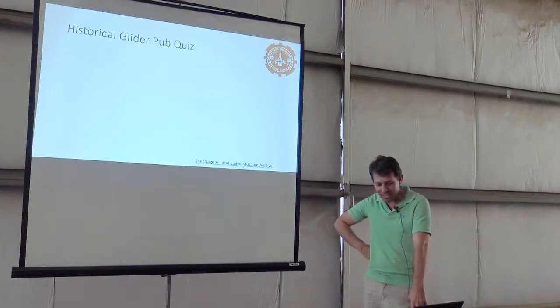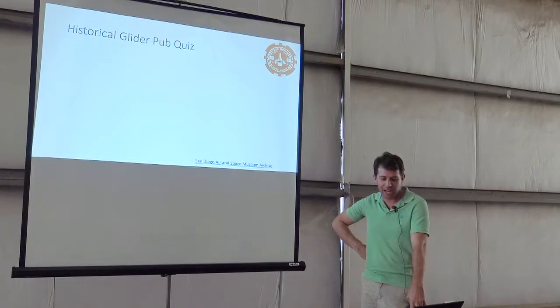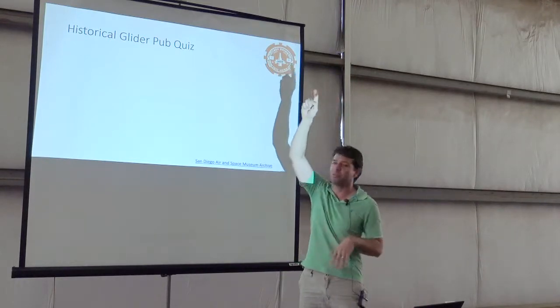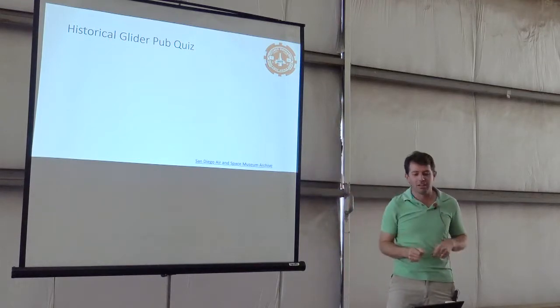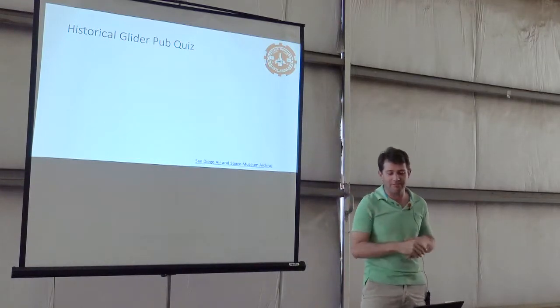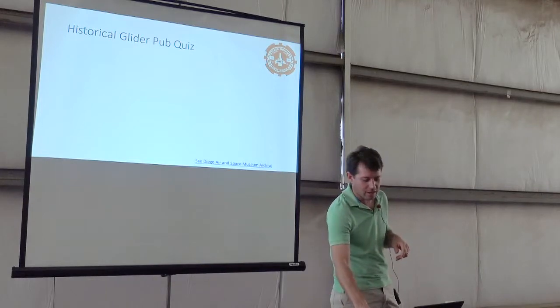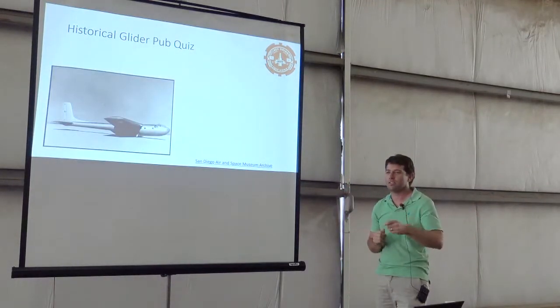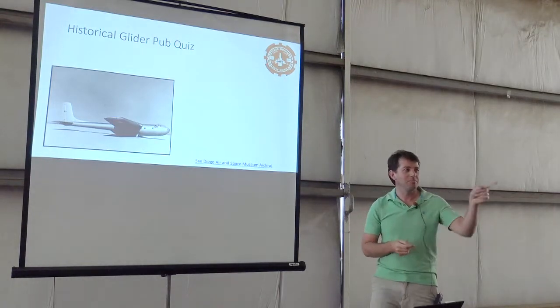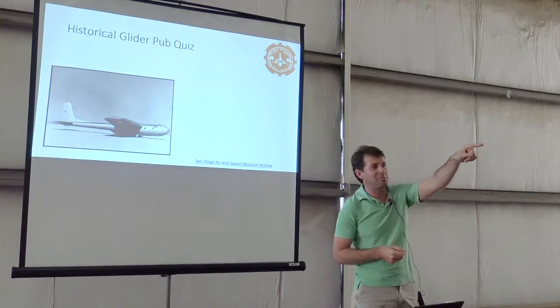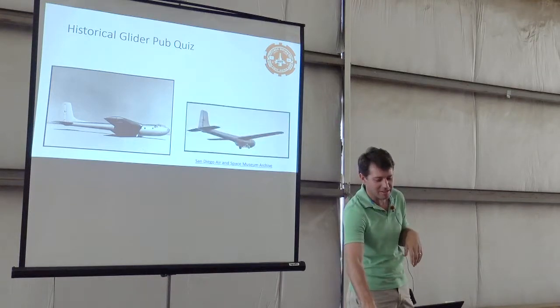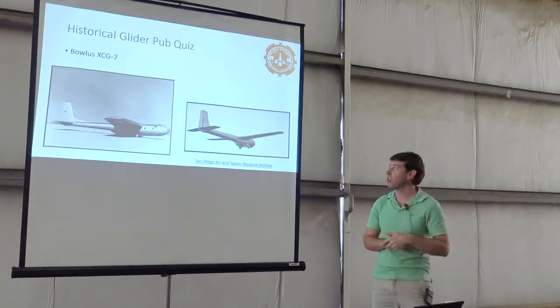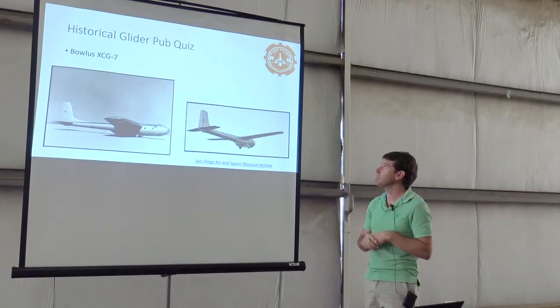This is a historical glider pub quiz. Up here you can see this little token - this is a one free beer token. Whoever puts up their hand first to identify the following glider. Any takers? There's a beer? It's a Waco. There we go, gentleman in the back, one beer for you. That is the Waco CG-4, a cargo glider from World War II vintage.